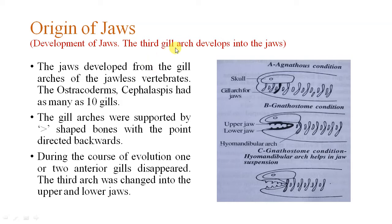When we talk about the origin of jaws, this figure shows that the third gill arch developed into the jaw. You can see the first being the agnathan condition, second the gnathostome condition, and third the gnathostome condition with the hyomandibular arch held in the jaw suspension.